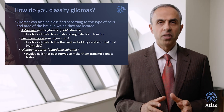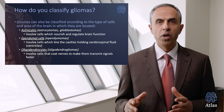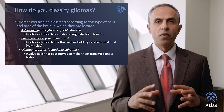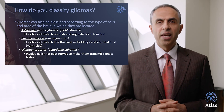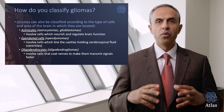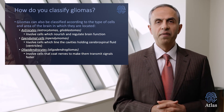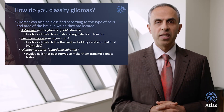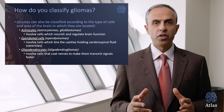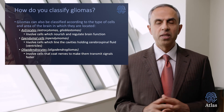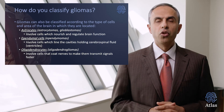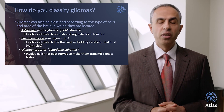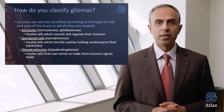The ependymal cells that cause ependymomas involve cells that line the cavities holding the cerebrospinal fluid — or brain fluid — within the brain. These cavities are called the ventricles. Oligodendrocytes, giving rise to oligodendrogliomas, involve cells that coat the nerves to make signal transmission possible within the neurons.